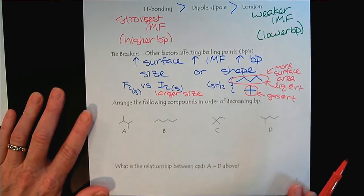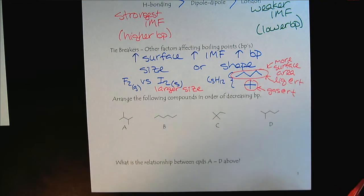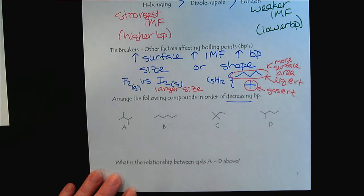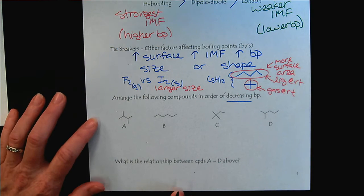So arrange the following compounds in order of decreasing boiling point. And you can just go ahead and use the letters to make it simpler. And so one of the main points here is to make sure we get the right order, especially if we're doing a multiple choice question.